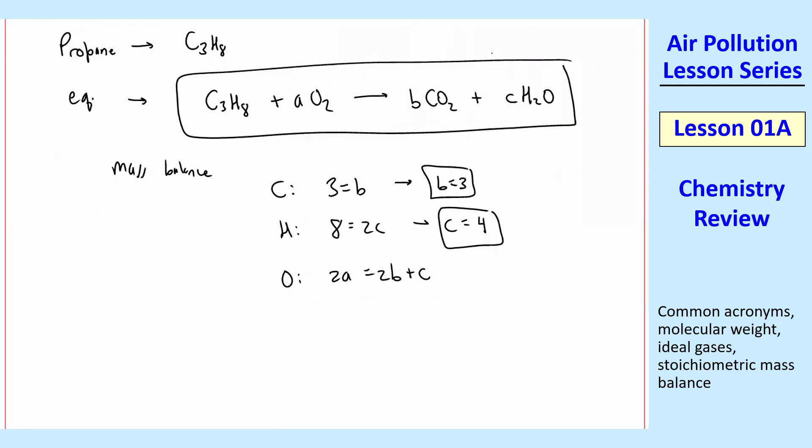So doing this mass balance for carbon, I have three equal B. And you can see that from here, three C's there, and then a B, C there. So B equal three. H, eight on the left, and there's two times C on the right. So C equal four.